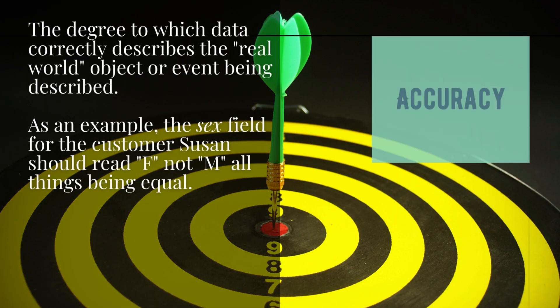Accuracy: the degree to which data correctly describes the real-world object or event being described. As an example, the sex field for the customer Susan should read F, not M, all things being equal.